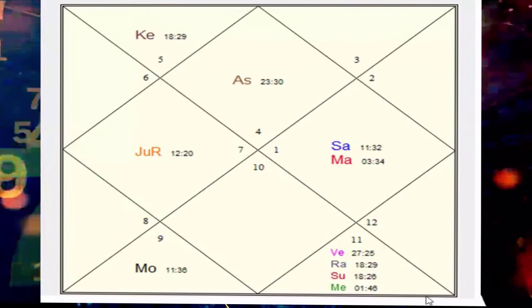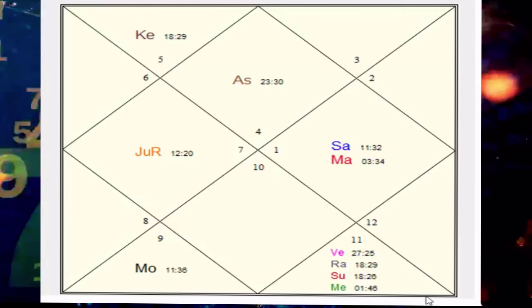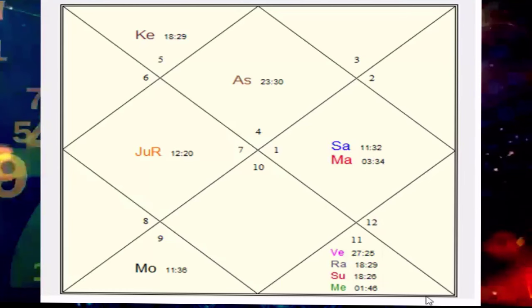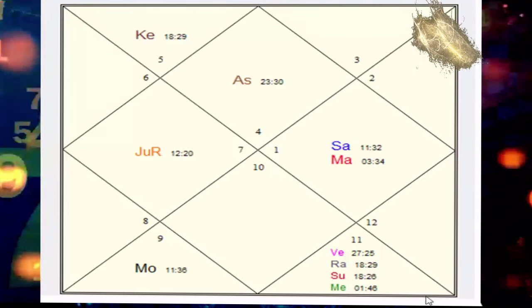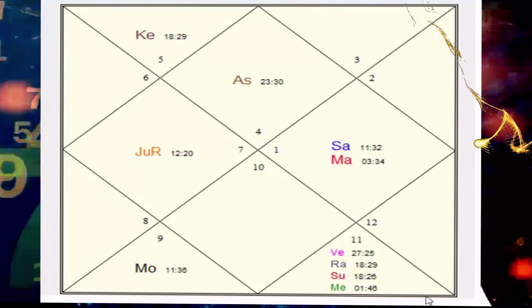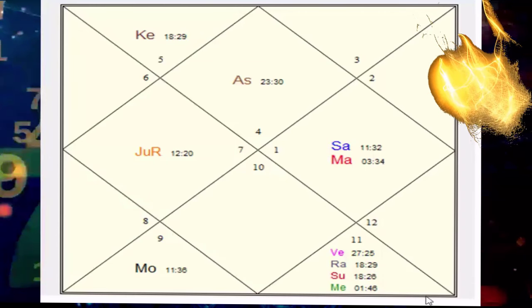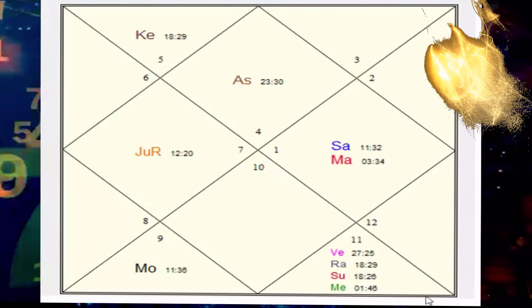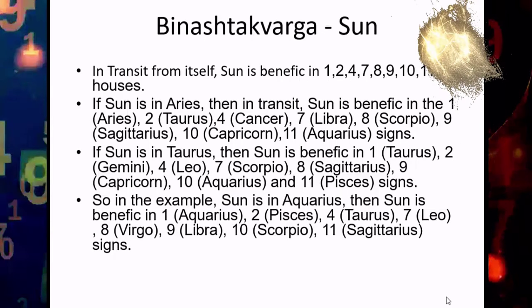You will be able to see a Neecha Bhanga Raja Yoga in the 10th house with Saturn and Mars, though Saturn is not exactly debilitated at 11 degrees. You will also see the Viparita Raja Yoga by virtue of the 12th lord being placed in the 8th house, which is Mercury being placed there. Now, to make the Ashtakavarga chart, the next step is to see the placements of planets from each other and how in transit from each other they will manifest results. Sun is in the Aquarius sign, so the first step is to make a Bhinnashtakavarga — a Varga table for the Sun itself.